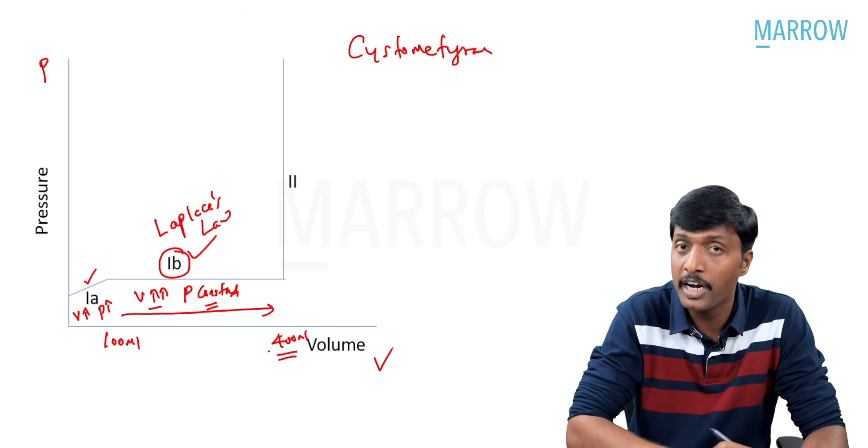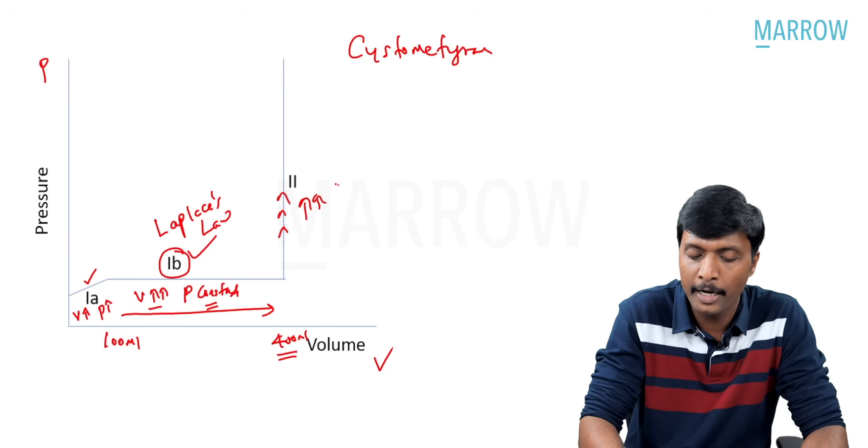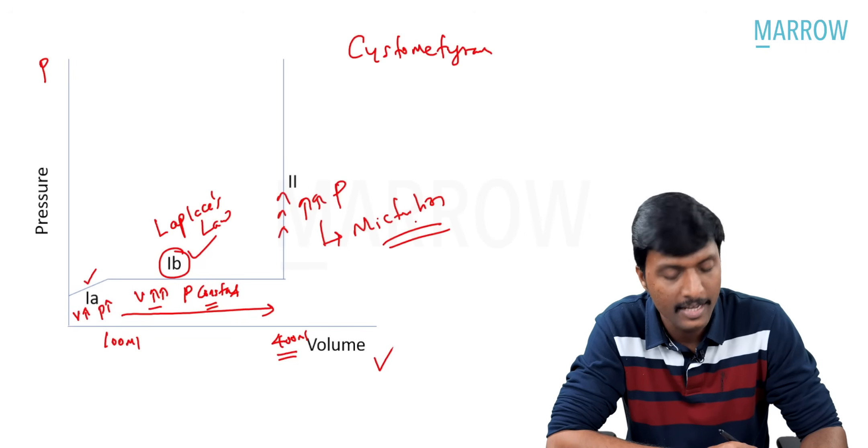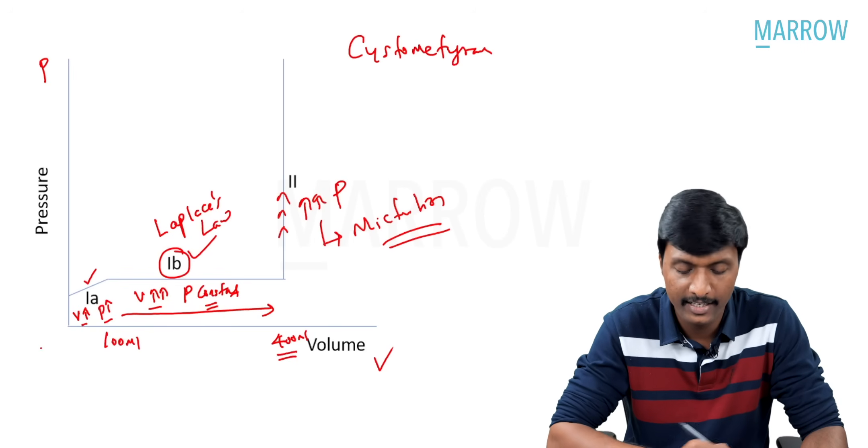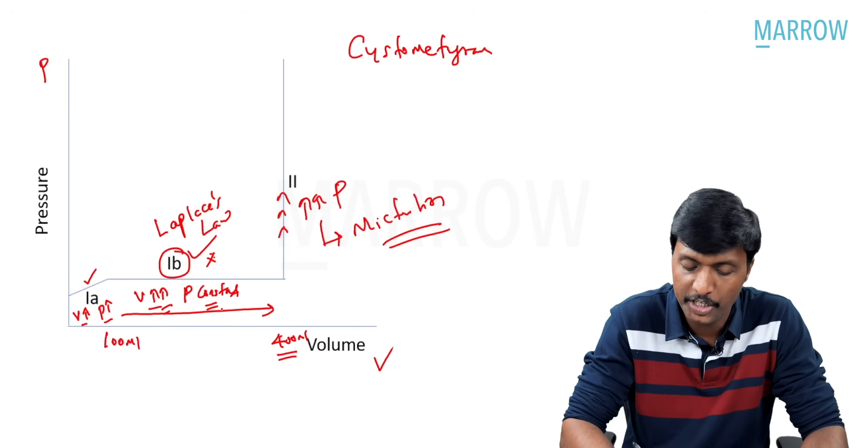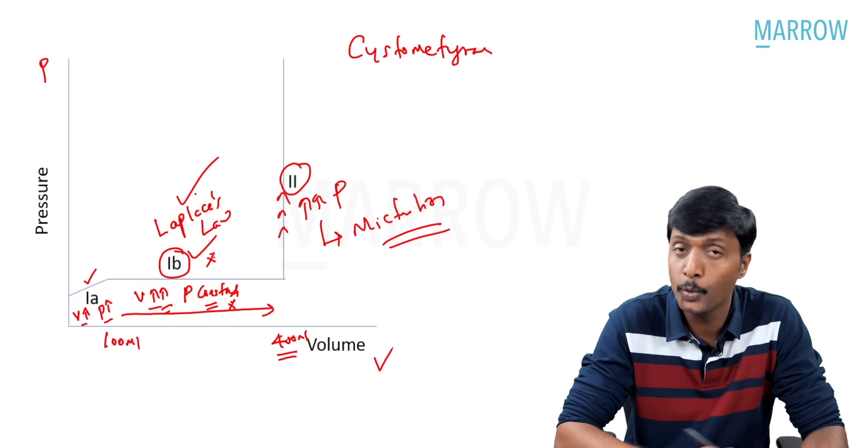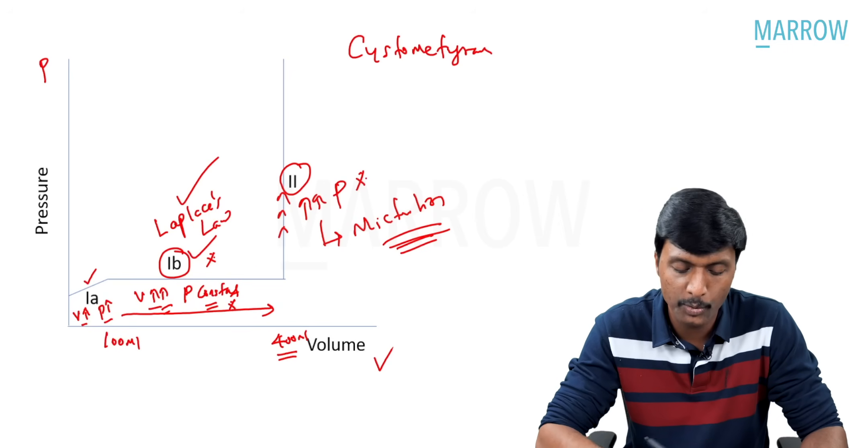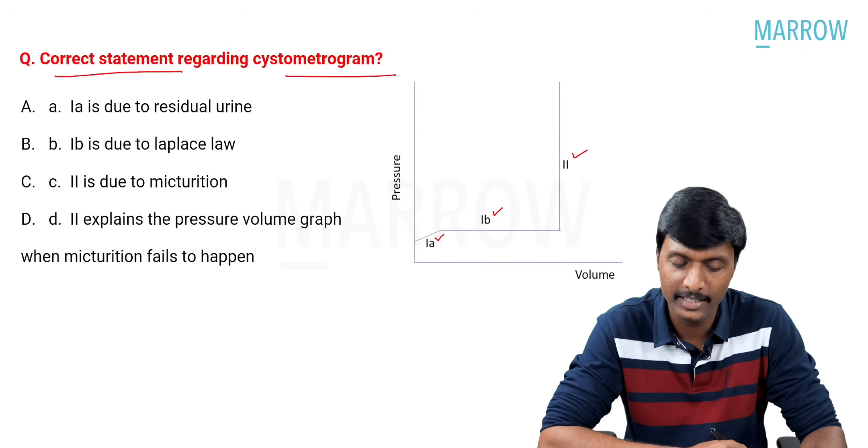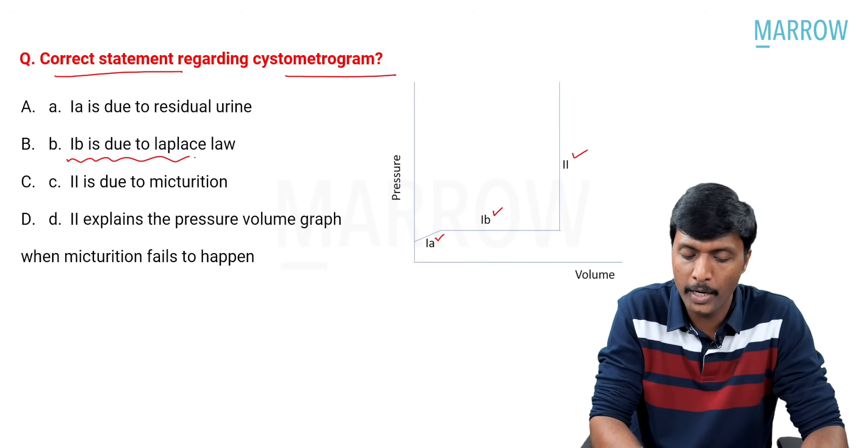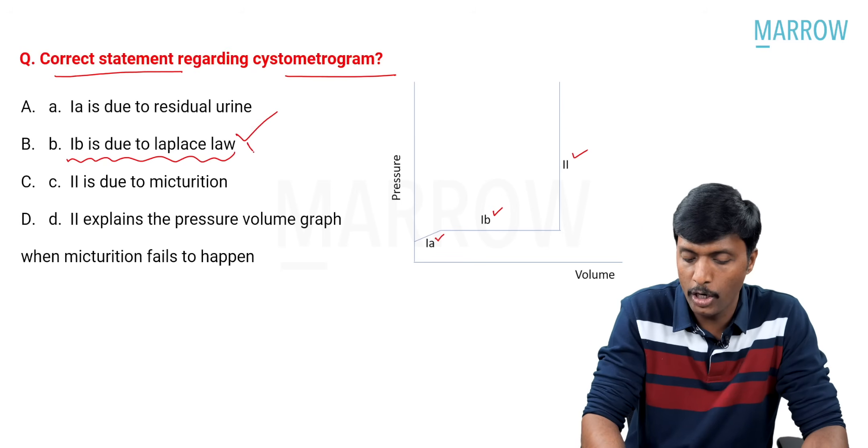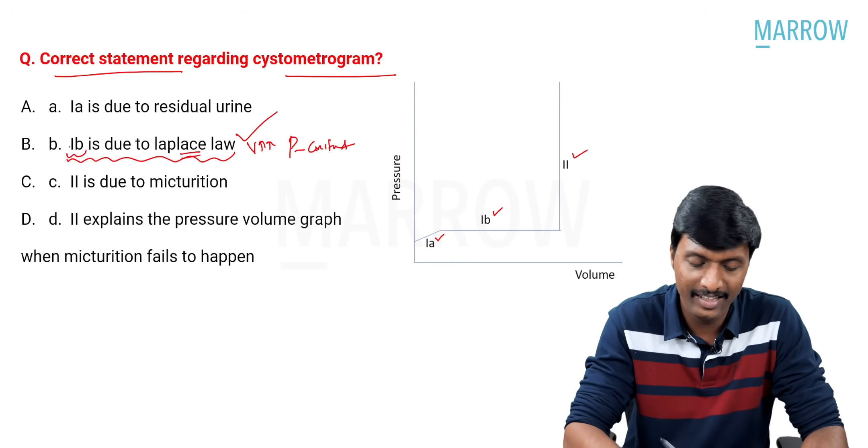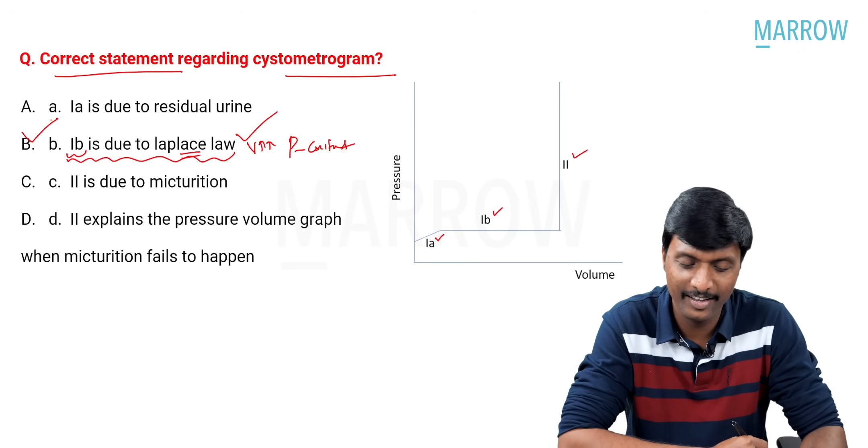When the volume reaches 400 ml, there will be tremendous increase in pressure, eventually leading to micturition. Very important. Look very carefully. Segment 1A, volume increases, pressure increases. Segment 1B, volume is tremendously increasing, but pressure is held constant because of Laplace's law. In segment 2, there is tremendous increase in pressure ending as micturition. This 1B is a manifestation of Laplace's law. Now, go to the question. 1A is due to residual volume. 1B is due to Laplace's law. This is the best answer. Volume is increasing, but pressure is held constant because of operation of Laplace's law in 1B. The answer is option B here.